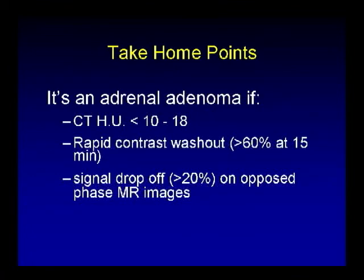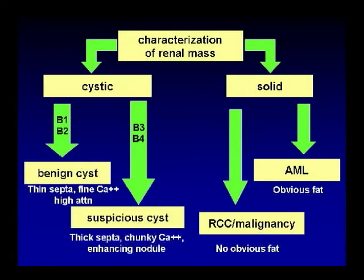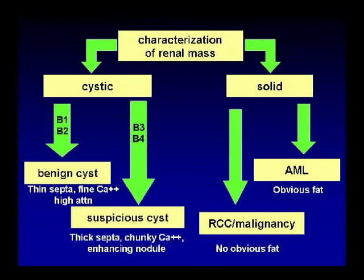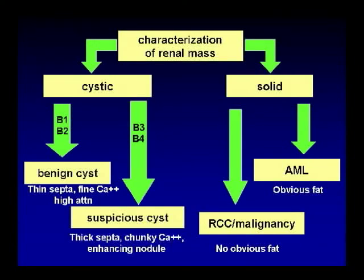For adrenal adenoma: CT Hounsfield unit less than 10 to 15, rapid contrast washout, and signal drop-off on opposed-phase MR images. To summarize characterization of renal masses: decide whether it's cystic or solid. Cystic with benign features is Bosniak type 1 or 2 — benign, don't do anything. Suspicious features — Bosniak 3 or 4 — needs to be resected. For solid masses, first look for obvious fat. With obvious fat, characteristic for AML, no other differential. Without obvious fat, it's renal cell carcinoma or other malignancy.